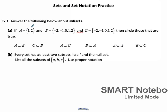So we have the set A, which includes the numbers just 1 and 2, and then we have the set B, which includes these numbers, and the set C, which includes these 5 numbers. Okay, circle the ones that are true. A is a subset of B. So if it's a subset, then all the elements of A are also in B. So here we have 1, 2 is in A, and 1, 2 is also in B, so yes, this is a subset.